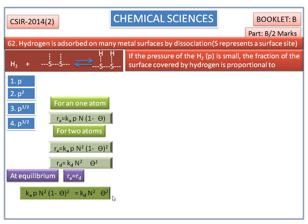We get a new equation. In this equation, we have common N². Cancel out this N². We get K into P into (1 minus θ)² equals θ².